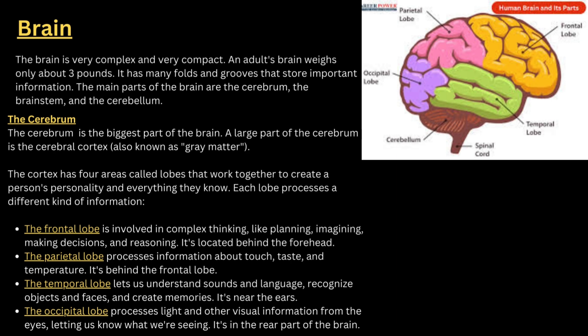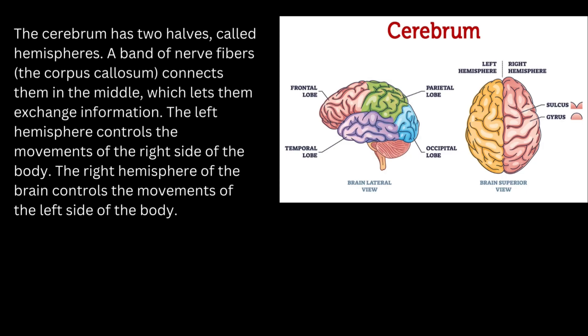The brain is divided into three parts: the cerebrum, cerebellum, and brainstem. The cerebrum is the biggest part of the brain. The larger part of the cerebrum is called the cerebral cortex, which is gray matter. The cerebral cortex has four areas called lobes: the frontal lobe, parietal lobe, temporal lobe, and occipital lobe. The cerebrum has two halves called hemispheres. A band of nerve fibers called the corpus callosum connects them in the middle, allowing the exchange of information. The left hemisphere controls the movement of the right side of the body, and the right hemisphere controls the movement of the left side.